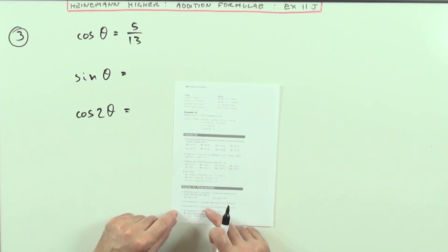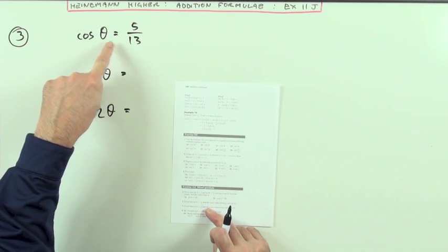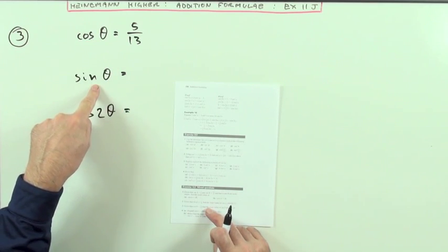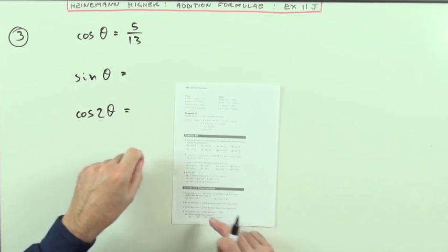Question 3, same as question 2, given that the exact value of the cosine of theta is 5 thirteenths, find the exact value of sine theta and cos 2 theta.